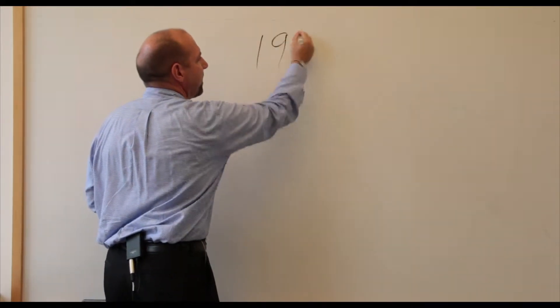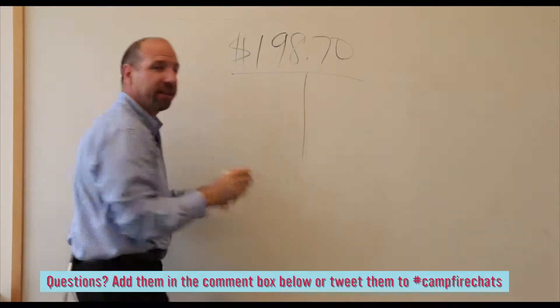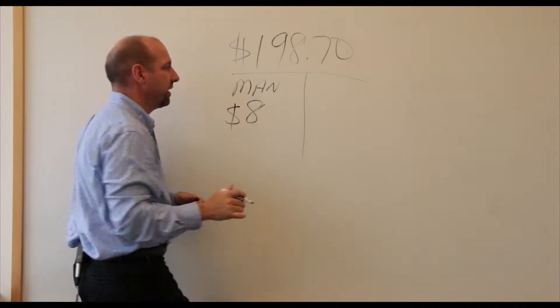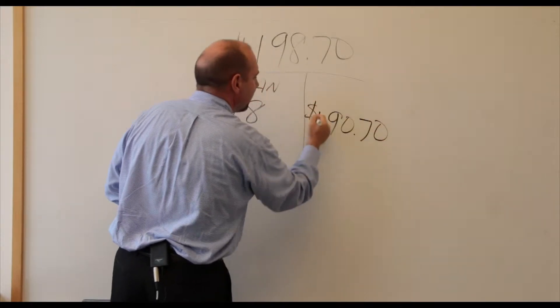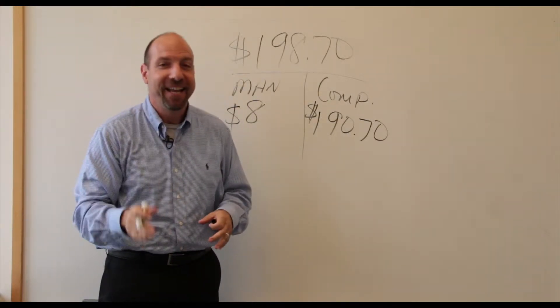Everybody loves their gadgets, their cool items, but do you ever wonder what they really cost? Take, for example, an iPhone. Pretty expensive, right? It costs $198.70 to make an iPhone. That's broken down into two basic categories: manufacturing costs at about $8, and components and technology at $190.70, for a grand total of $198.70. The bottom line is, if you don't know what it costs to make your project, your model, your design, your next great thing, you'll never be able to understand your break-even, how to turn a profit, and how to be successful long term.